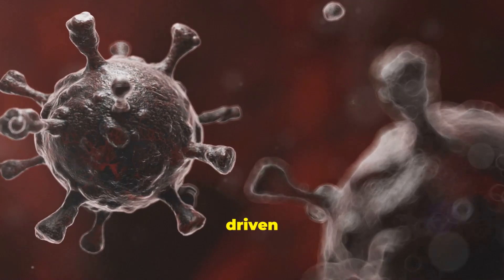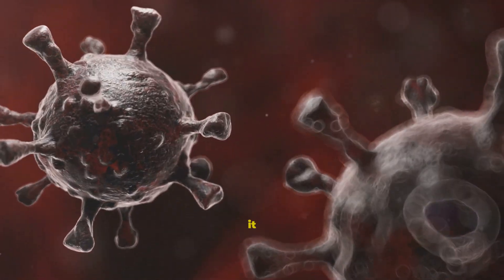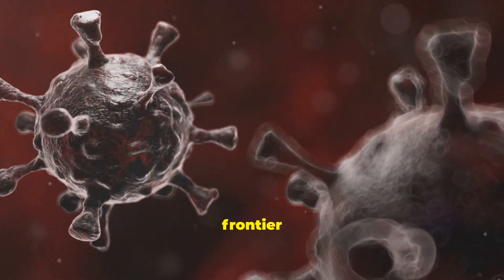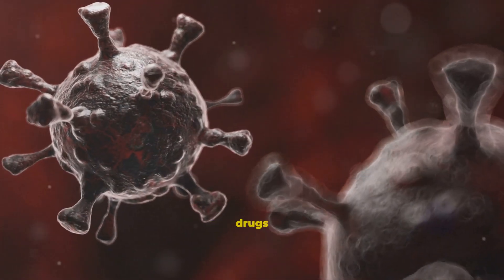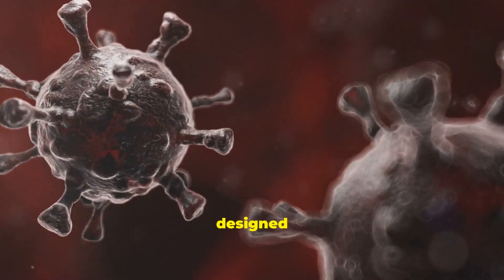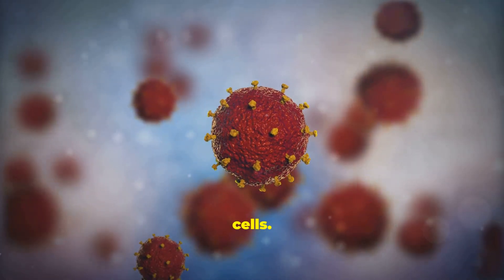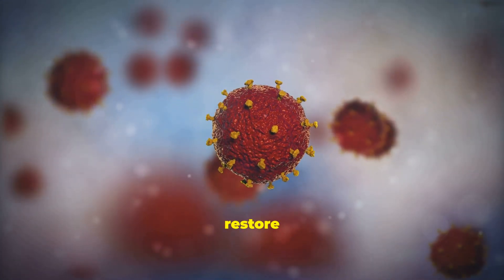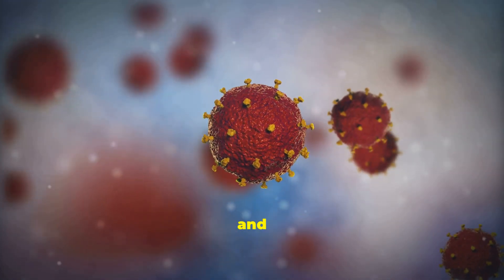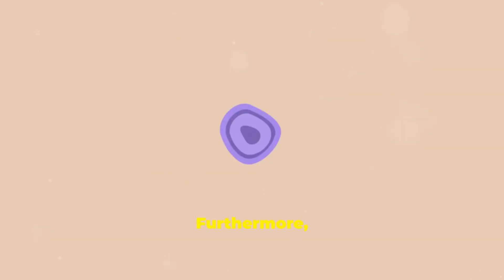So, if aging is driven by epigenetic noise and zombie cells, the question becomes, can we clean it up? This is the frontier of longevity research. Scientists are developing drugs called senolytics, designed specifically to seek out and destroy these senescent cells. In animal studies, clearing out these cells has been shown to restore youthful characteristics and delay the onset of age-related diseases.